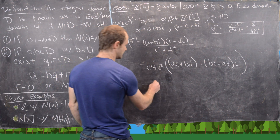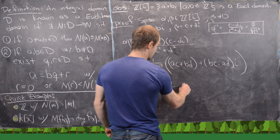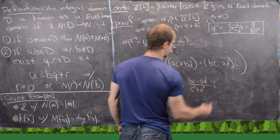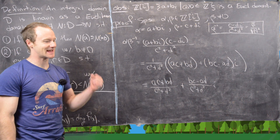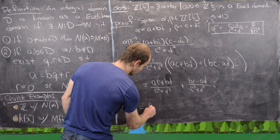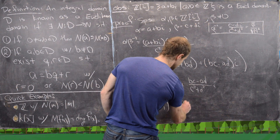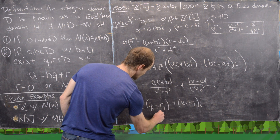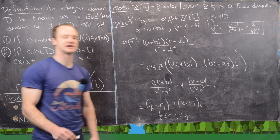This gives us α·β⁻¹ = (ac + bd)/(c² + d²) + (bc − ad)/(c² + d²)·i. The next step is to take these two rational numbers and write each as an integer plus a remainder. We write this as q₁ + r₁ + (q₂ + r₂)i, where r₁ and r₂ lie between −½ and +½.